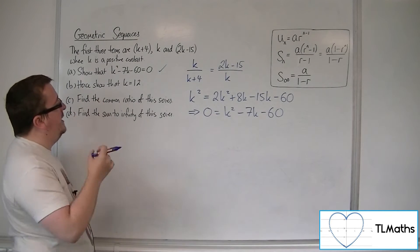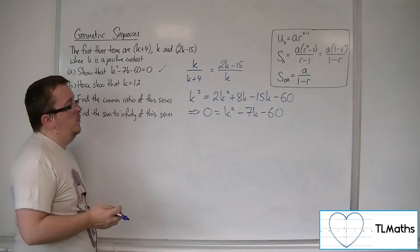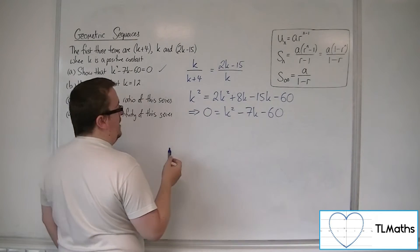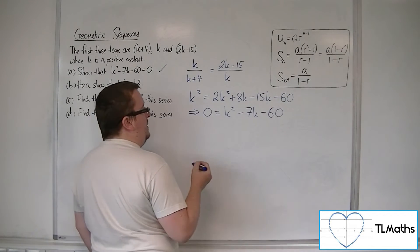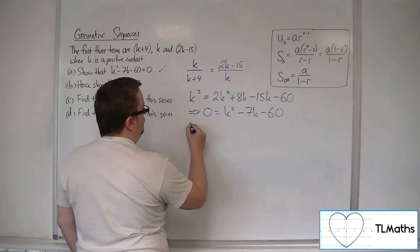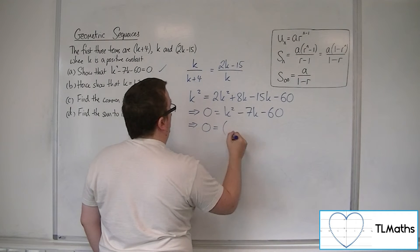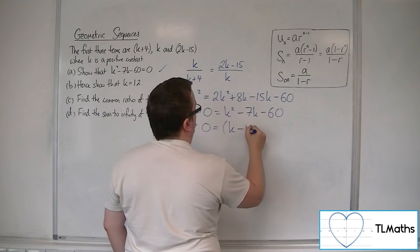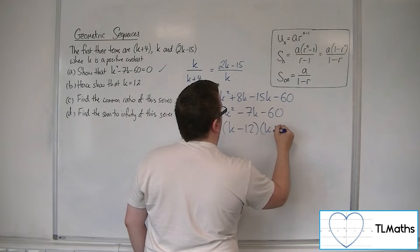Hence show that k must be 12. Well, this is a quadratic equation that can be factorized. So 0 is equal to k minus 12 times k plus 5.